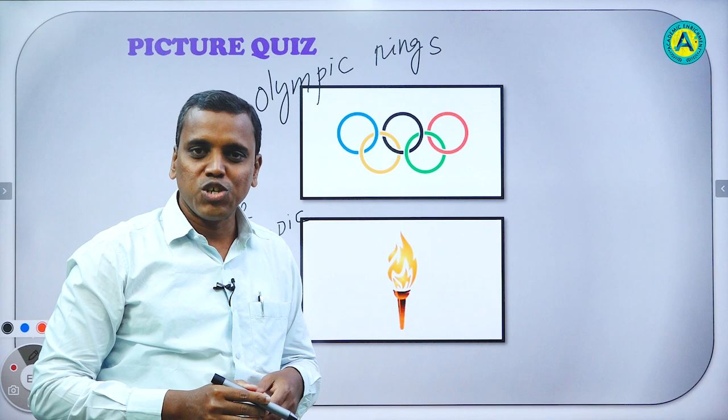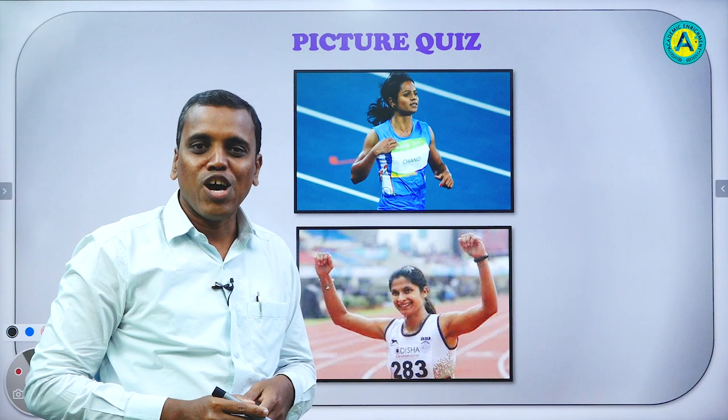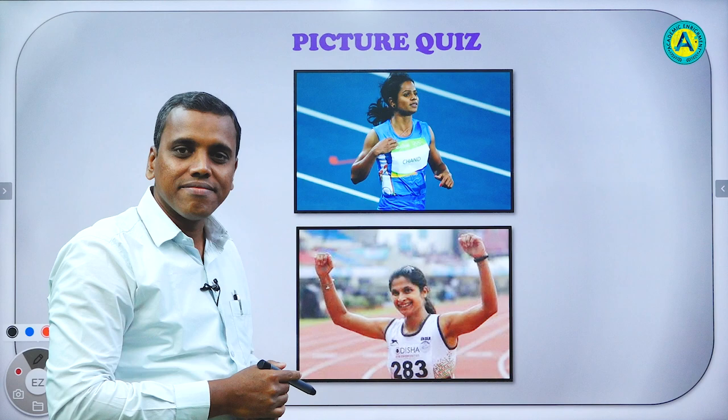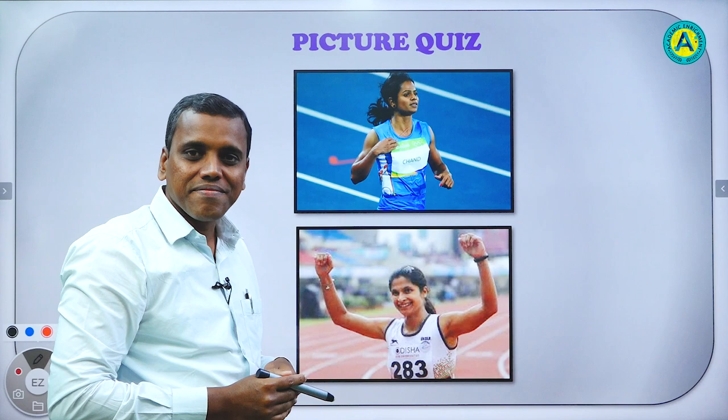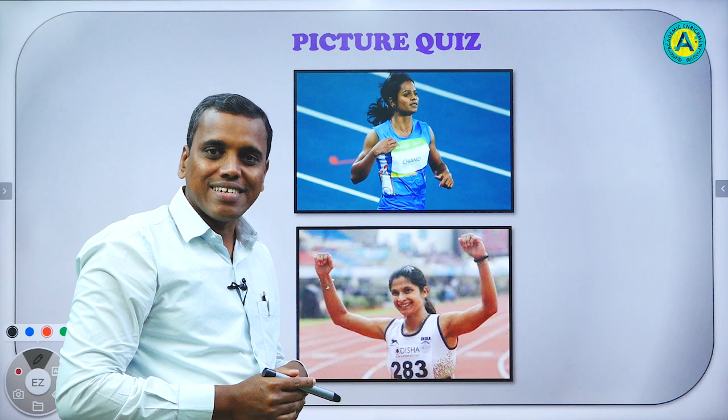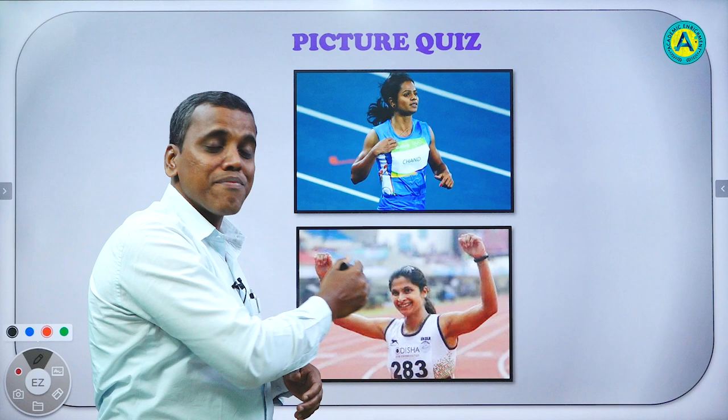Now we have two more photographs. Look at the photographs. Can you recognize them? Look at the first photograph. I will give you a hint. Both these photographs are Odia athletes. They are from Odisha. Can you recognize them now? Both have participated in the Olympic games.